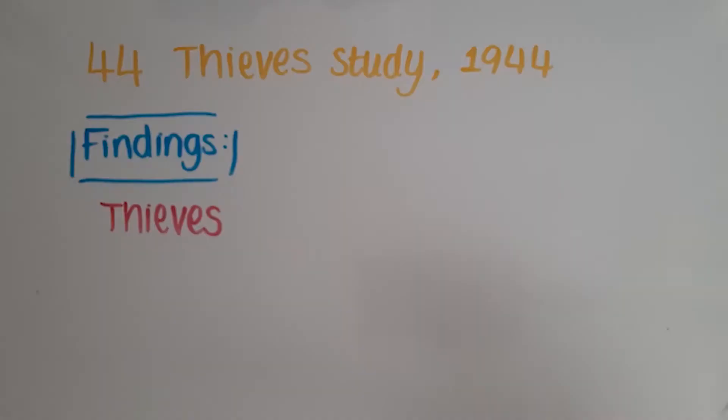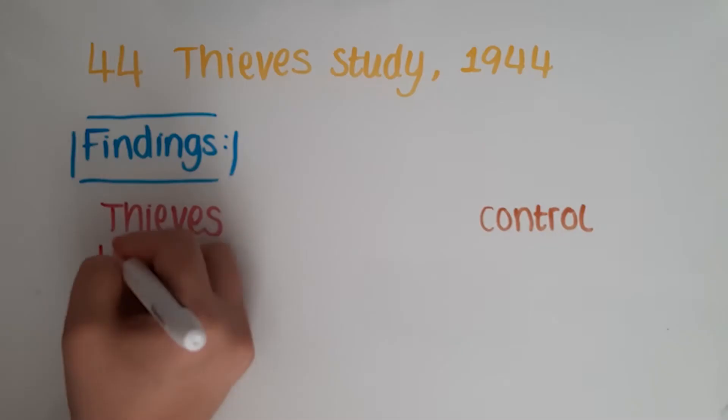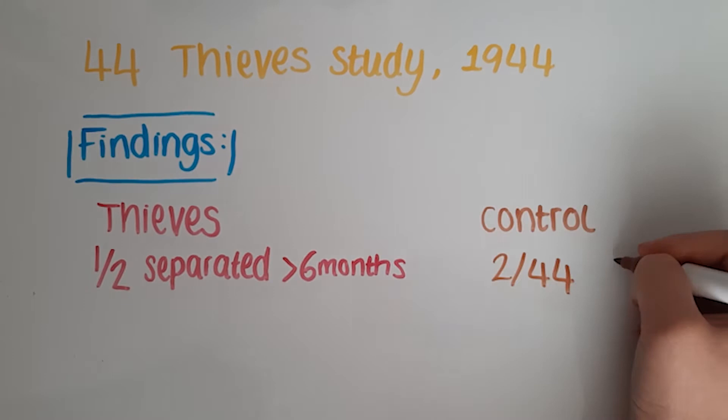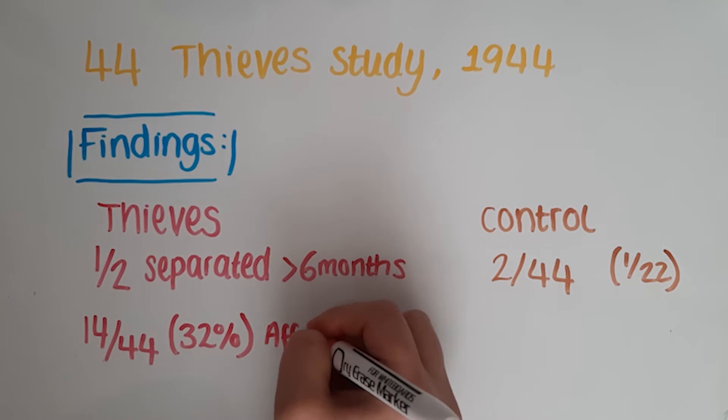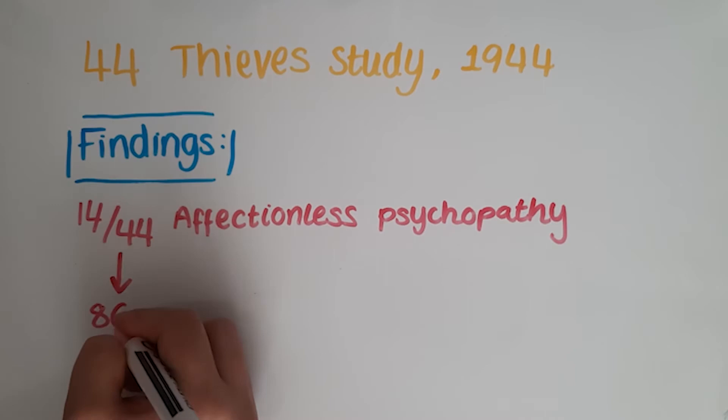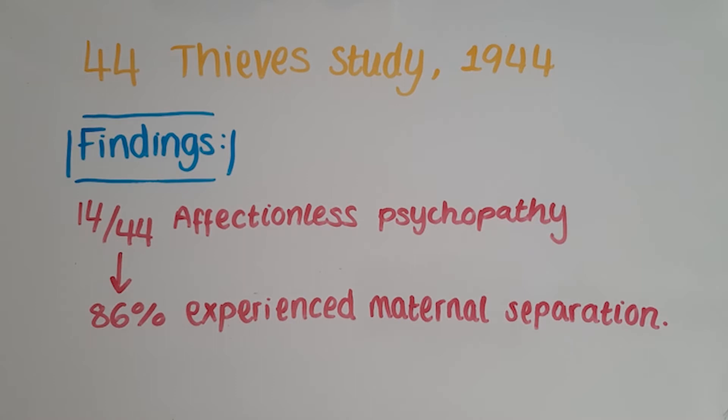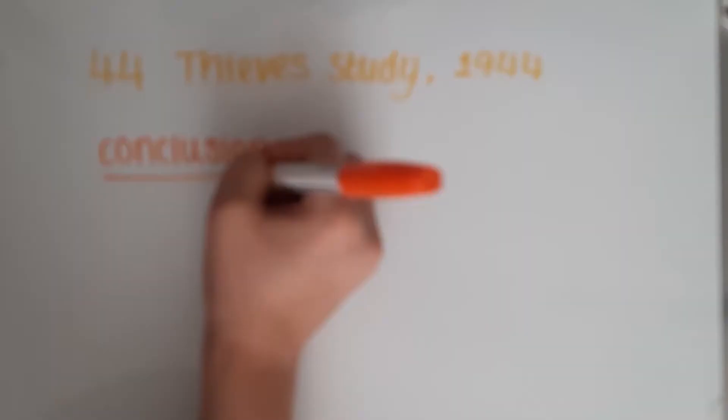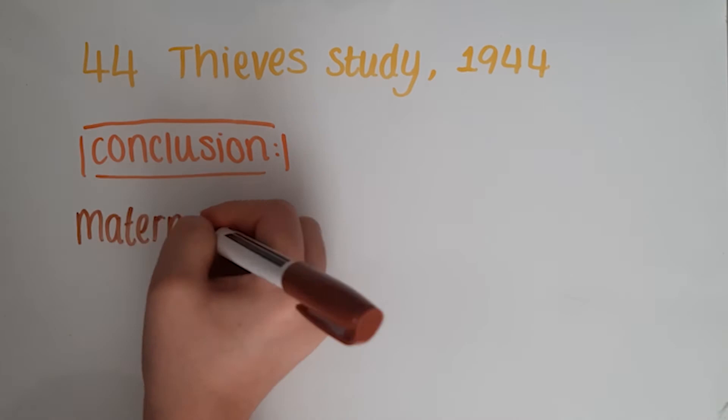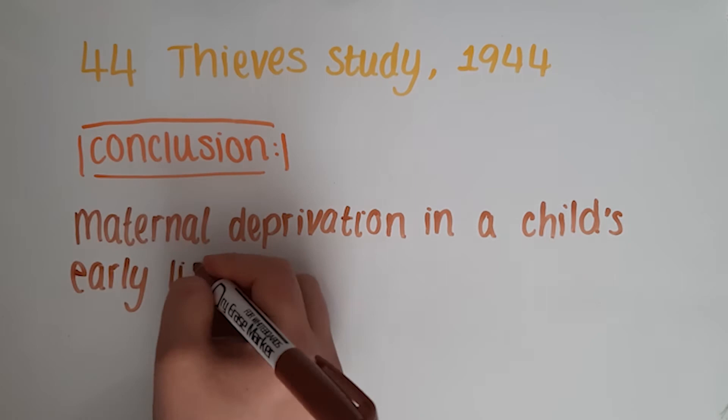He found more than half of the juvenile thieves had been separated from their mothers for longer than six months during the first five years. In the control group, only two had had such a separation. He also found 14 of the young thieves showed affectionless psychopathy, whereas none of the control group did. Bowlby found that 86% of the psychopaths in group 1 had experienced a long period of maternal separation before the age of five. Only 17% of the thieves not diagnosed as affectionless psychopaths had experienced maternal separation and only two of the control group had experienced a prolonged separation in their first five years. Bowlby concluded that maternal separation or deprivation in the child's early life caused permanent emotional damage. He diagnosed this as a condition and called it affectionless psychopathy.